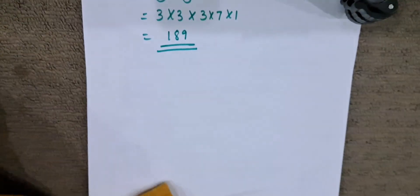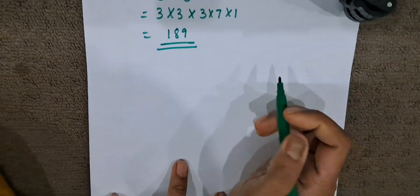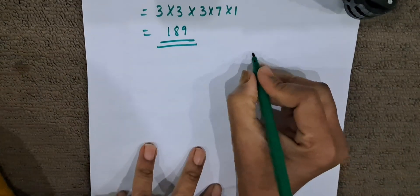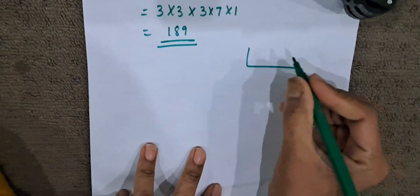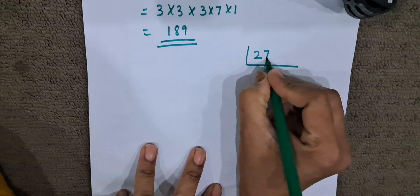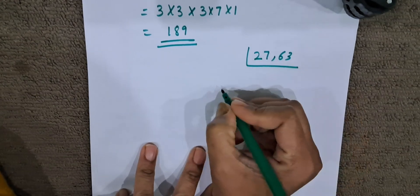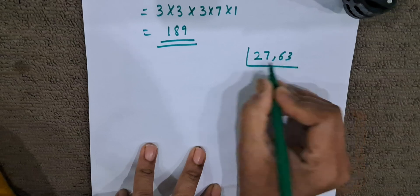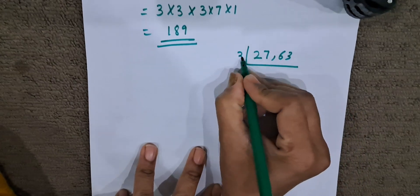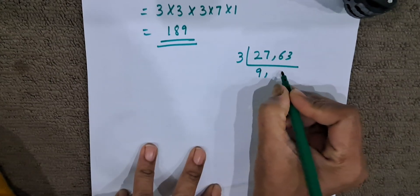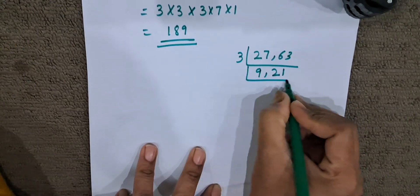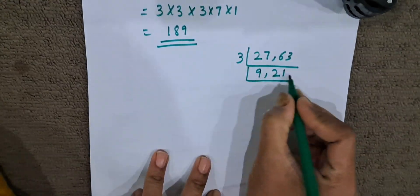So this was easy to figure out. Now usually we have to find HCF and do the next steps very quickly. So when we have to find the HCF in a quicker way, we will take both the numbers together. Now 27 and 63 — what is common between these 2? 3. 3 nines are 27, 3 twos are 6, 3 ones are 3. So 9 and 21 are remaining.